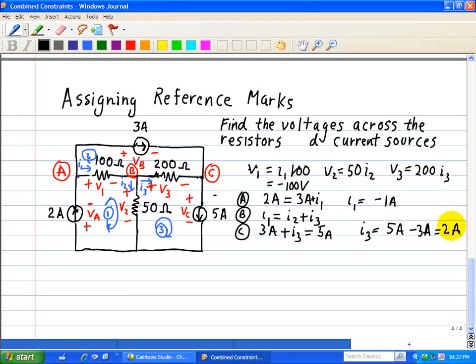Hence, what we have next is now we can calculate the voltages across V2 and V3. So we have V2 is equal to I2 times 50 ohms, but we saw that I2 can be calculated as follows: I2 is equal to I1 minus I3.